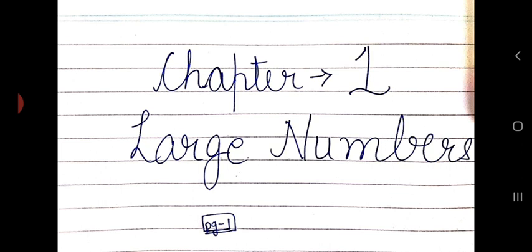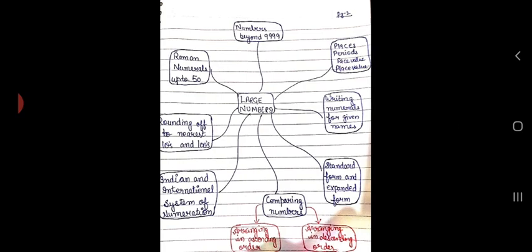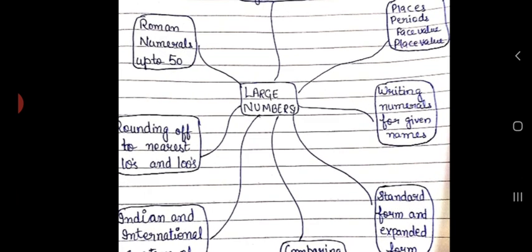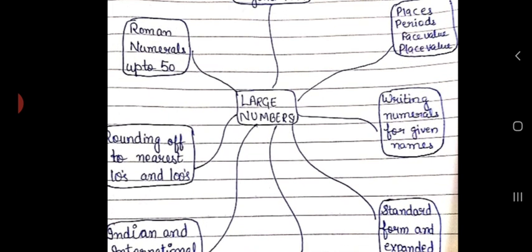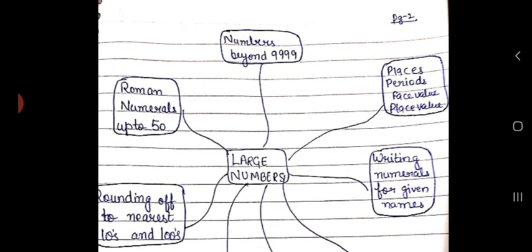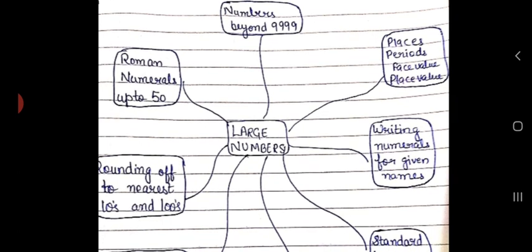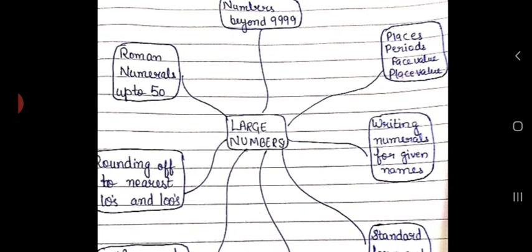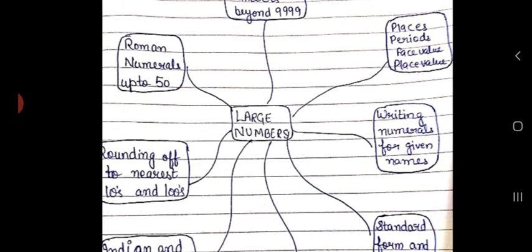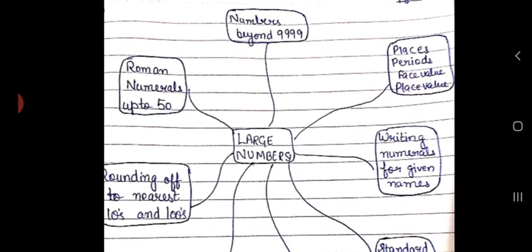On the second page, you are going to make the mind map, as I have also made in my two videos. Here you are going to write the name of the chapter in the center and the rest of all the contents arranged around it.